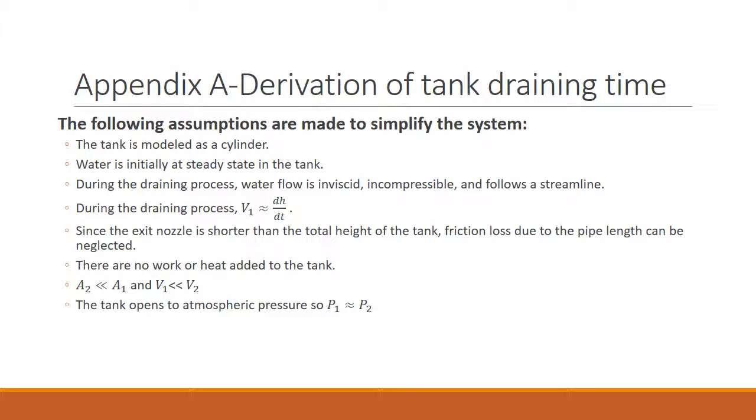Because V1 is assumed to be much less than V2, the system is at quasi steady state and the analysis can be done. Since the exit nozzle is shorter than the total height of the tank, friction loss due to the pipe length can be neglected. There are no work or heat added to the tank and the area of the exit is smaller than the cross sectional area of the tank. The tank opens at atmospheric pressure, so P1 is approximately P2.